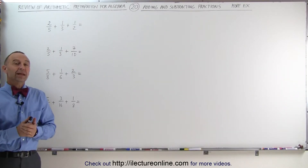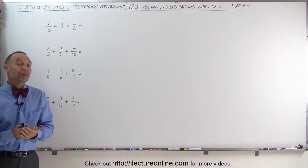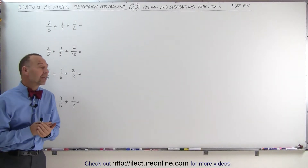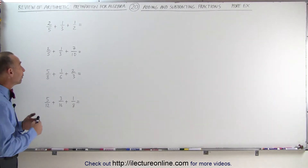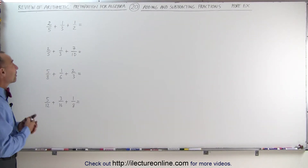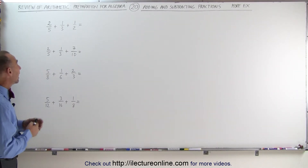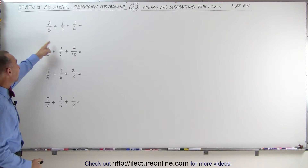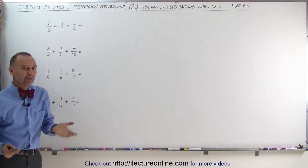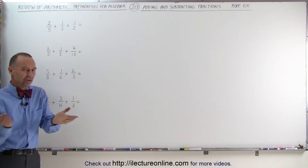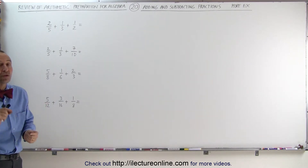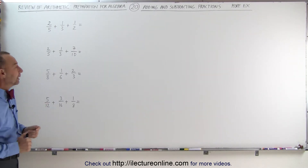Welcome to ElectronLine. In this video, we're going to illustrate how to add fractions together when you have more than two of them. In this case, we're going to add three fractions together. Notice that the denominators are not the same, which means we simply just can't add the denominators together — we need to find the lowest common denominator.